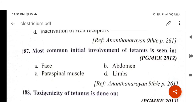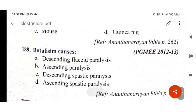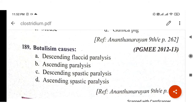Next question: Most common initial involvement of tetanus is seen in the face. Tetanus starts from the face initially — that is the most common initial involvement. This is a PGMEE 2012 question. Next: toxigenicity of tetanus is tested on mouse — PGMEE 2013 question. Next: botulism causes descending flaccid paralysis — it starts from the head and goes downward.